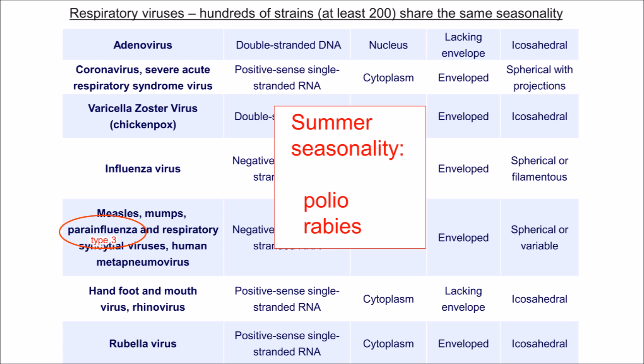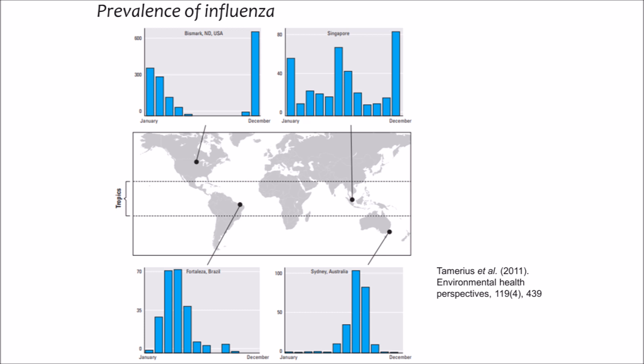I'm going to survey some of the important observational evidence, including some new results from New York City that are really game-changing. The first thing to say is that although viral illnesses virtually disappear in the summer in temperate regions, the same viruses thrive throughout the year in the tropics. Here you can see that influenza is common throughout the year in Singapore, but not in the USA and Australia in the summer.